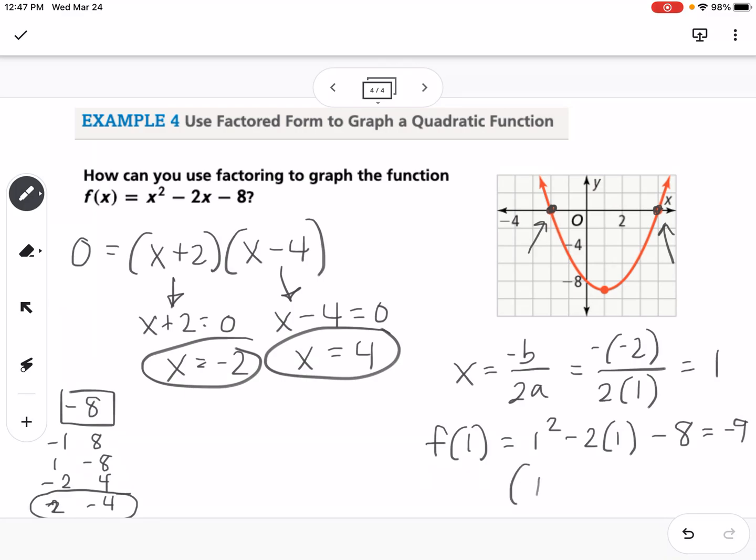That means the vertex is at the point 1, negative 9. I can plot the vertex right there, and then since this started out in standard form, I know my y-intercept is right there at negative 8, and then I can use that to mirror to the other side. We just found 5 points using both the vertex equation and factoring it. This is how we can use factored form to graph and solve quadratic functions.